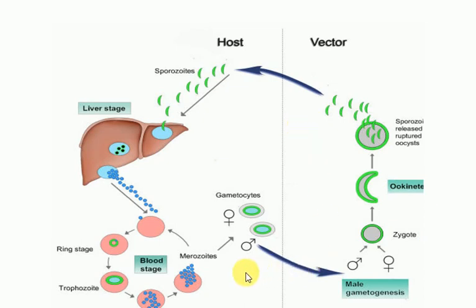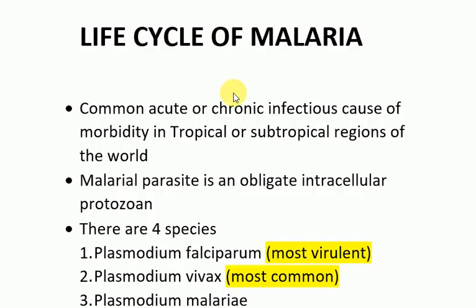When the next mosquito ingests these gametes, the life cycle continues. When the vector bites an infected person, it gets the gametes; when it bites a healthy person, it inoculates sporozoites into the host. Malaria can also spread through direct exposure to infected blood transfusions or contaminated needles. People who sleep outdoors without mosquito repellents or mosquito nets are at risk. Stagnant water and warm climate favor mosquito propagation. Diagnosis is made through clinical history, examination, and thick and thin blood smear.